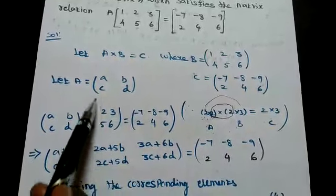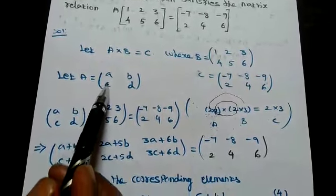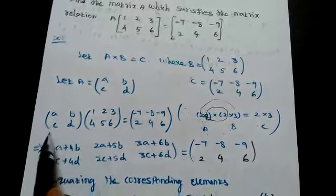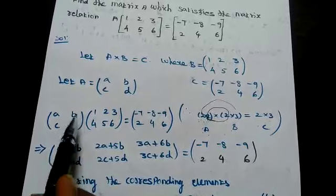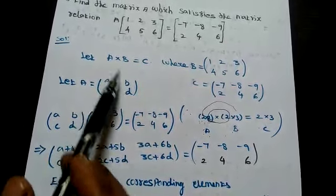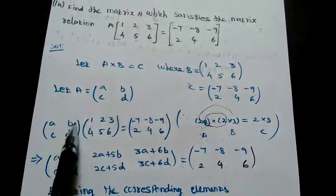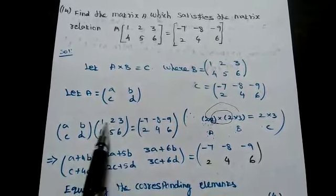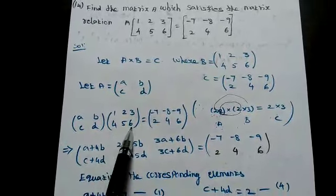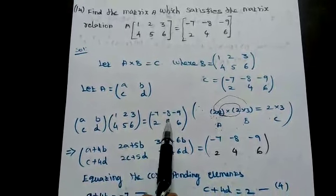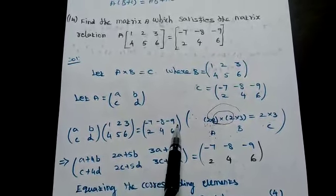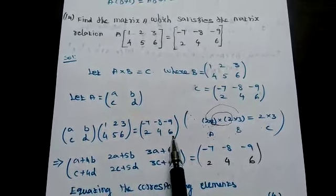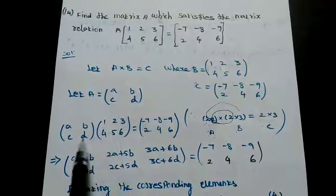Since A is 2×2, I assume A = [[a, b], [c, d]] — there are 4 constants. Substituting this A value, we get [[a, b], [c, d]] multiplied by [[1, 2, 3], [4, 5, 6]] equal to [[-7, -8, -9], [2, 4, 6]]. Now multiply these two matrices.